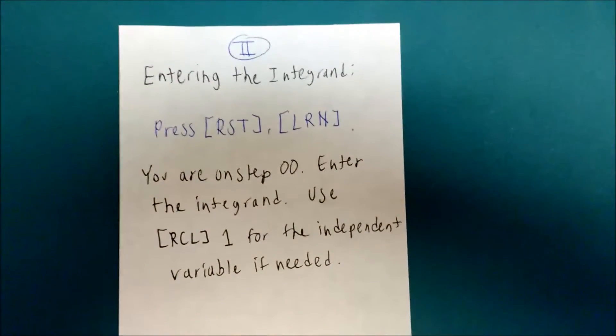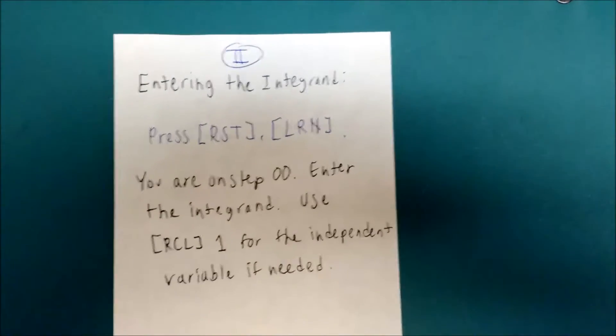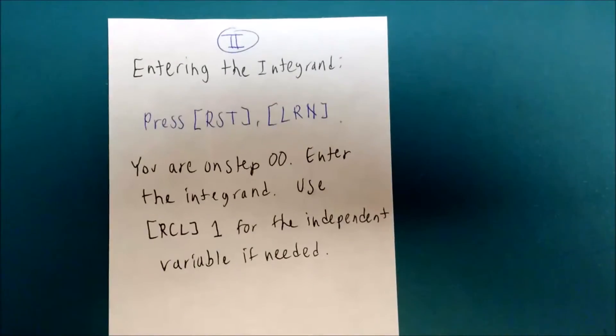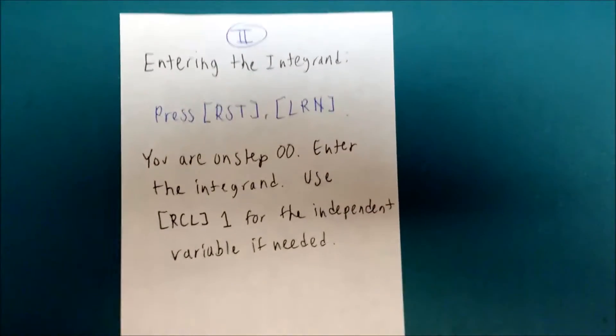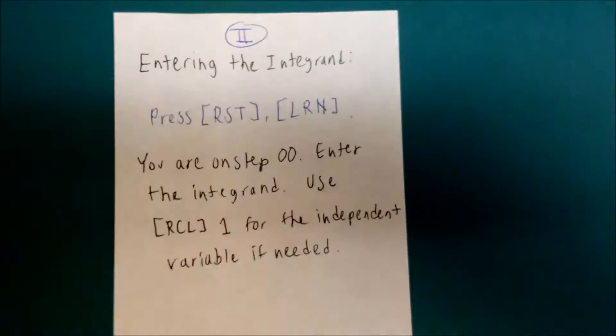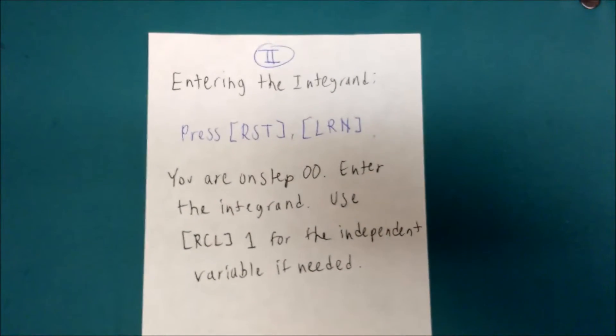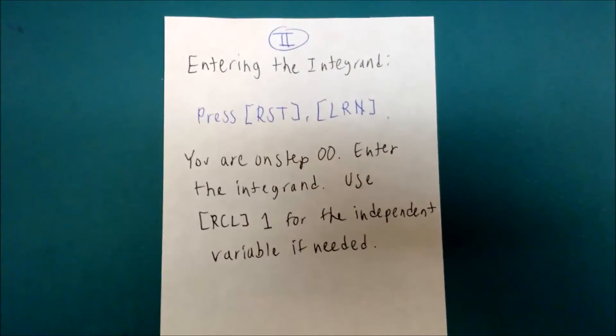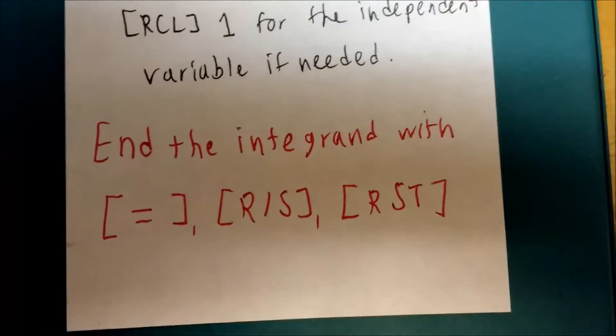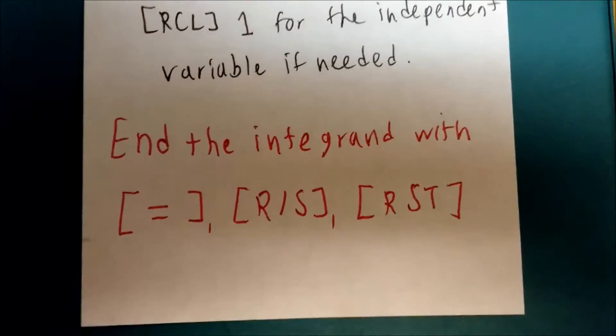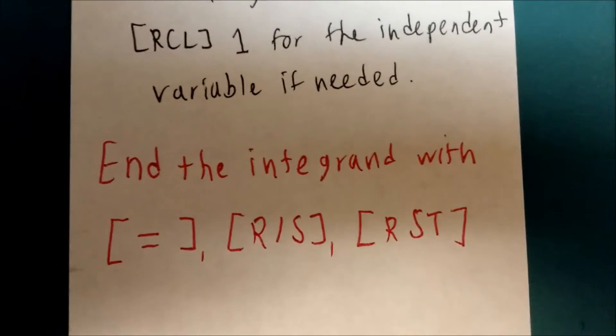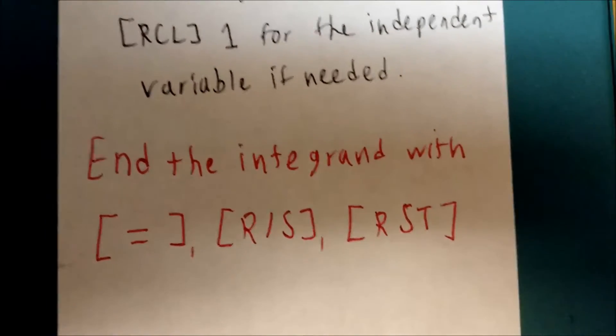Then we're going to enter the integrand. First, press reset to go back to step 0 and then learn, and then enter your integrand. If you're going to use the independent variable, use recall 1. It is important that you end the integrand with three keystrokes: equals, run-stop, and reset.